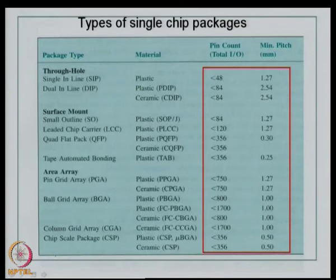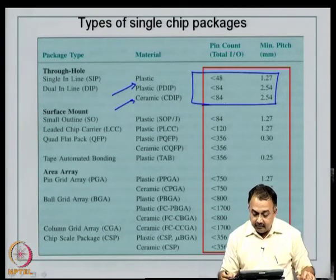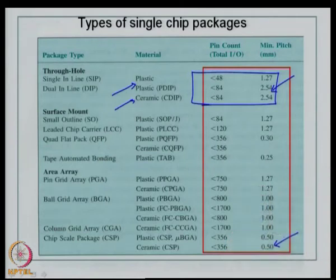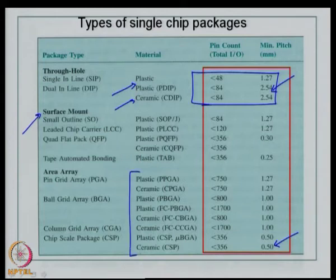This is a glossary of single chip packages. Through hole components include SIP (single inline package) and DIP (dual inline package), available in plastic or ceramic. Initially the pitch was 2.54 mm; today we talk about 0.5 mm or less for CSPs. Surface mount devices include small outline package, leaded chip carriers, and quad flat packs. In the area array package category, you have pin grid array, ball grid array, column grid array, and chip size package. Different varieties of BGA packages can be used based on application and electrical requirements.